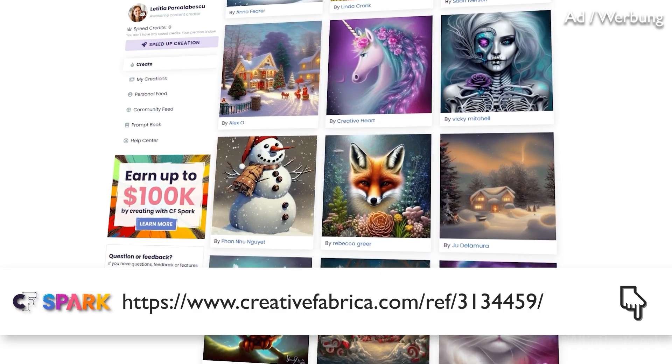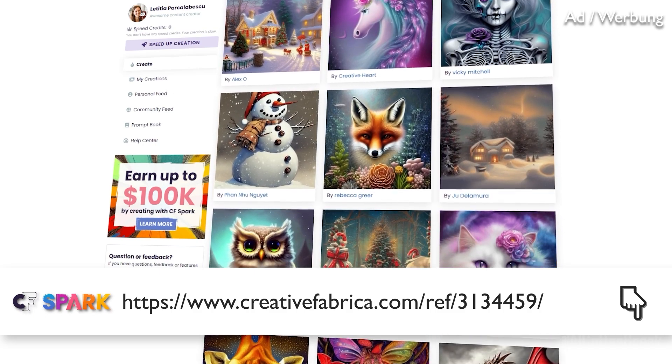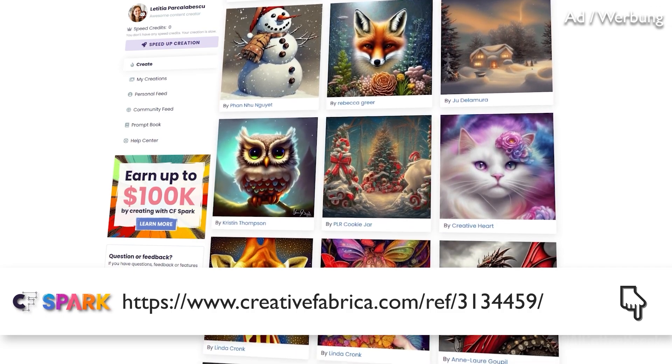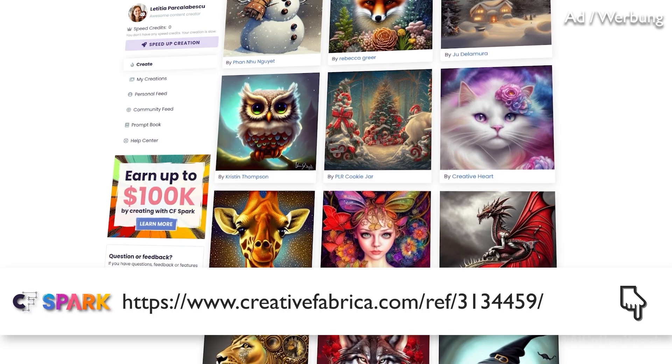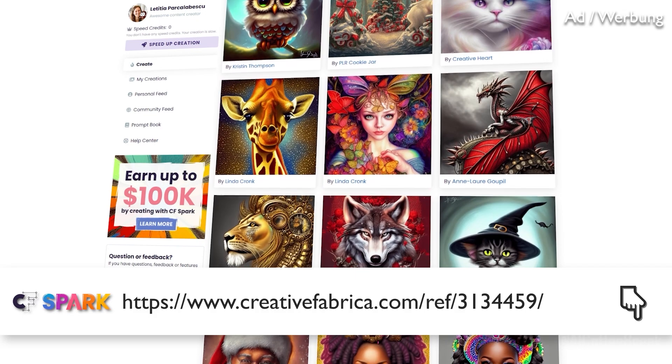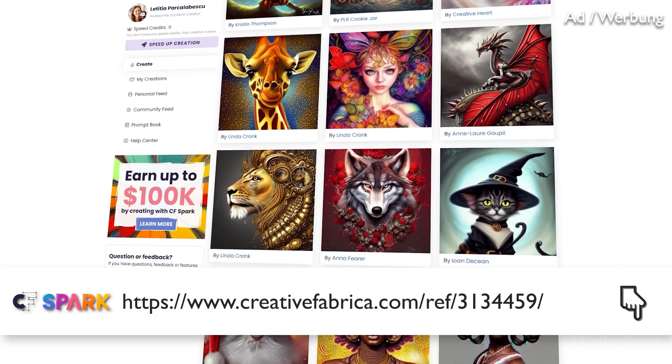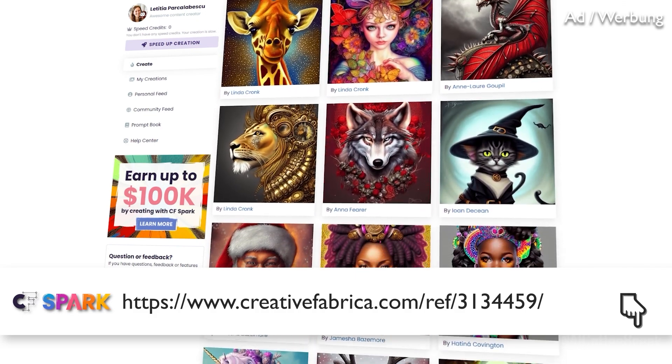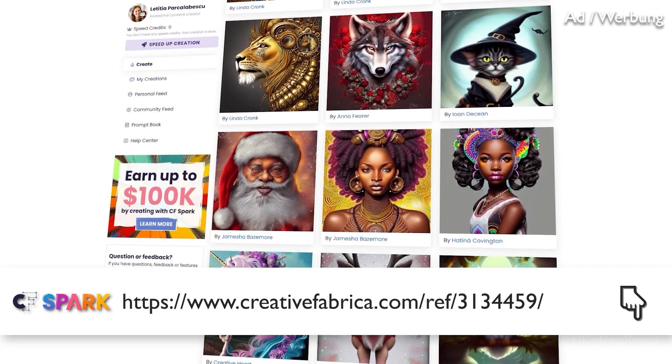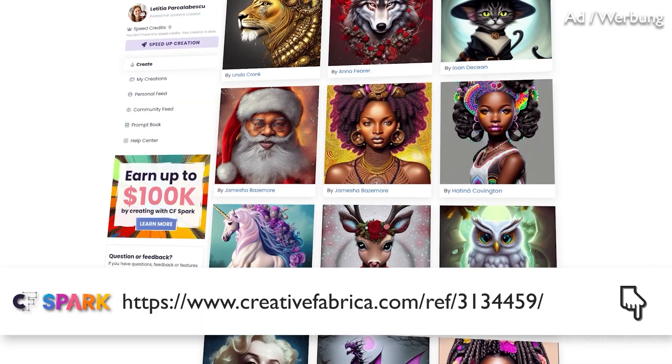If you choose the subscription, you get a thousand speed credits that allow you to jump to the top of the queue and even more. Users with the subscription can also download their own creation with the basic pod license. So what are you waiting for? Check out Creative Fabrica by using our affiliate link shown on the screen and in the video description below and start creating art from just text descriptions.